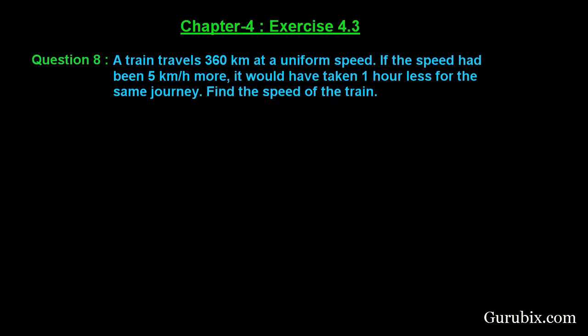Welcome friends. Let us solve question number 8 of exercise 4.3 of chapter 4. The question says a train travels 360 km at a uniform speed. If the speed had been 5 km per hour more, it would have taken 1 hour less for the same journey. Find the speed of the train.